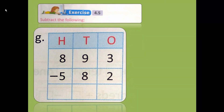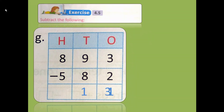Let's try to solve one more. The number is 893 minus 582. So 3 minus 2: the answer will be 1. Then 9 minus 8: the answer will be again 1. Then 8 minus 5: after 5, start counting — 6, 7, 8. How many fingers? 3 fingers. So the answer will be 311.